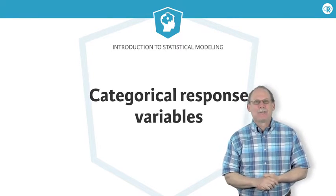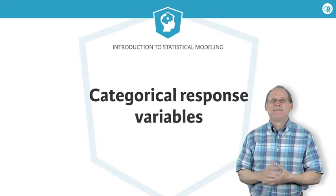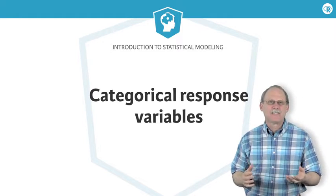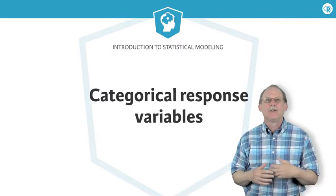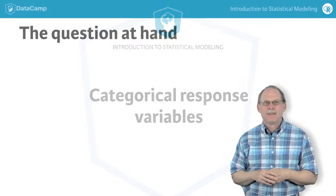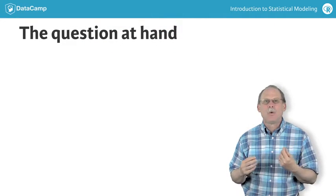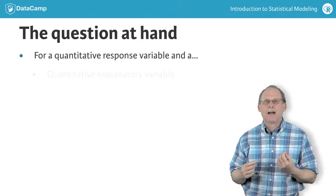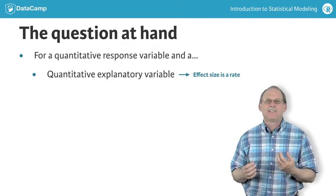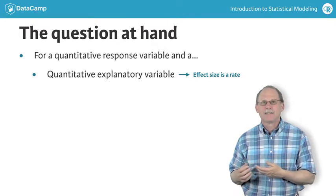In the previous segment, we talked about effect sizes. An effect size is a number that summarizes how the output of a model changes when we change the input. When we're looking at the effect of a quantitative input x on the output y, the effect size is a rate and has units of y divided by x.